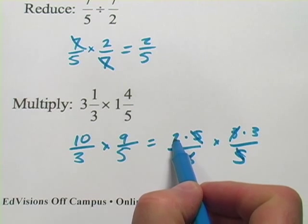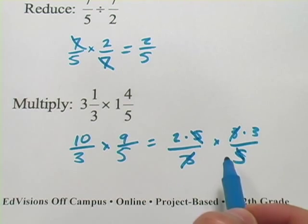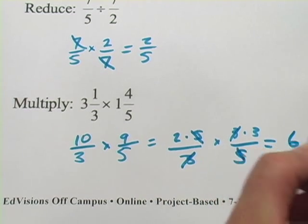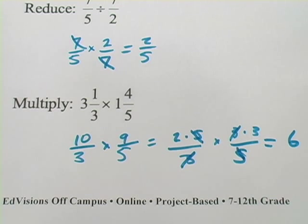And what I've got left is just a 2 on the top and a 3 on the top and nothing on the bottom. So I take the 2, I multiply it times the 3, and I get 6. And that is my answer.